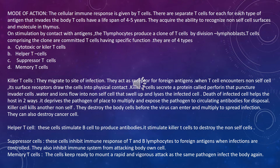Killer T cells migrate to the site of infection and act as receptors for foreign antigens. When a T cell encounters a non-self cell, its surface receptors draw it into physical contact. Killer T cells secrete a protein called perforin, which punctures the invader cell — whether bacteria, virus, or any other infection. Water and ions then flow into the non-self cell, causing it to swell up and lyse.